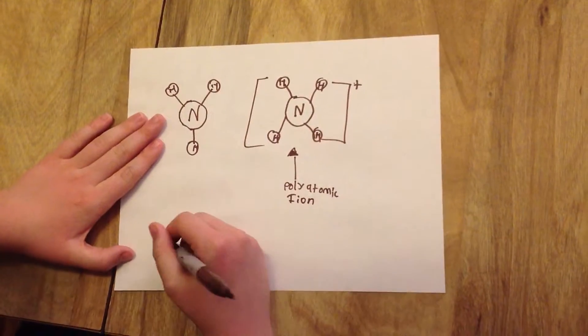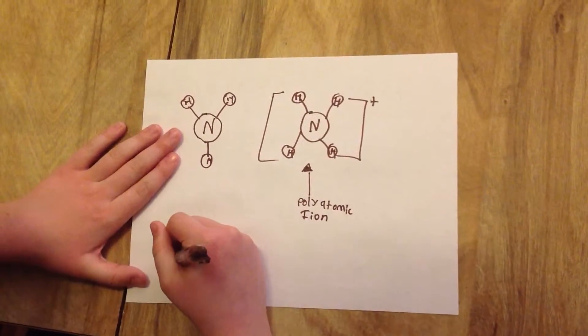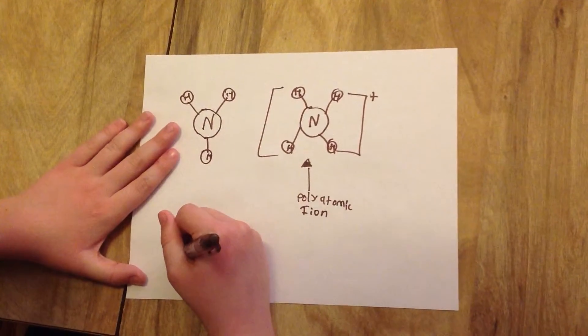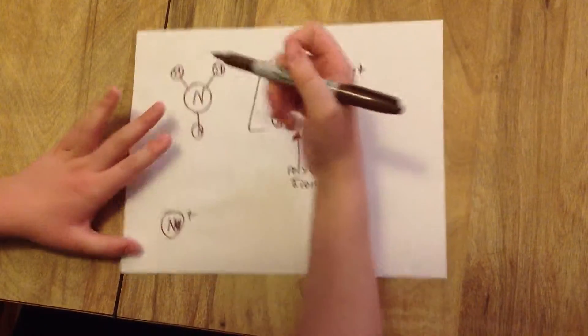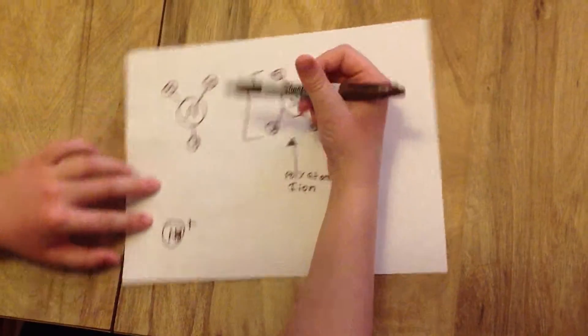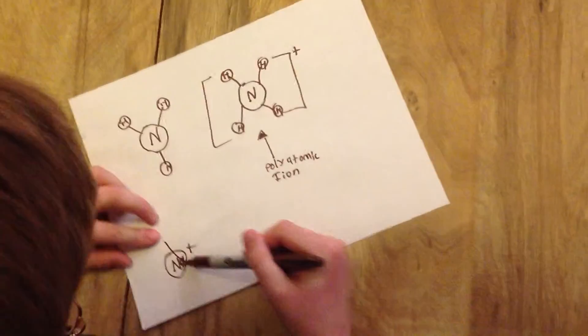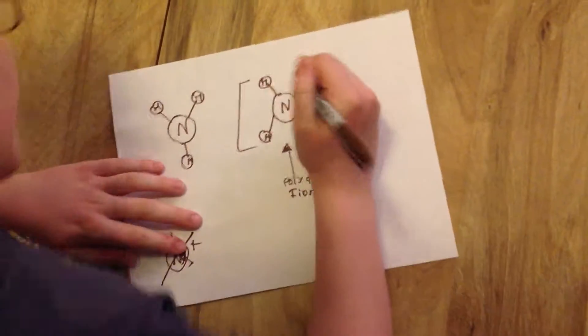An example of a monatomic ion would just be some positively charged sodium, but we don't need to worry about that.